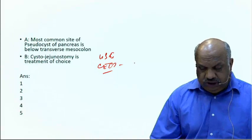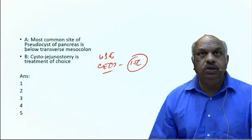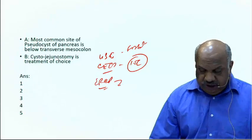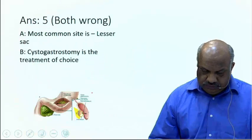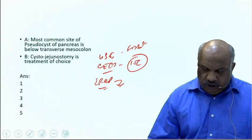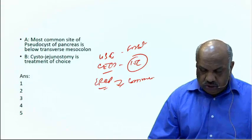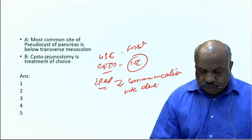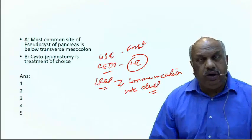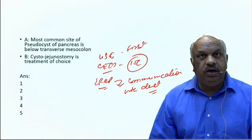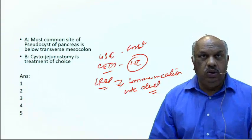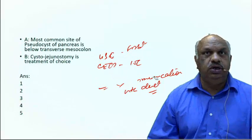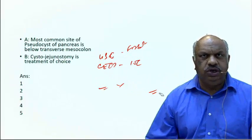Ultrasound is the first investigation; CT scan is the investigation of choice as it best shows the pseudocyst, wall thickness, and position. ERCP is used to determine whether the cyst communicates with the pancreatic duct. In acute pancreatitis they don't communicate, but in chronic pancreatitis and trauma they do.